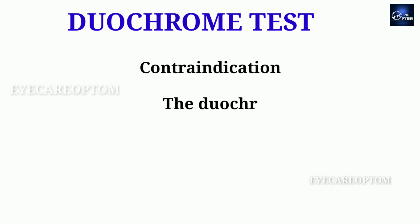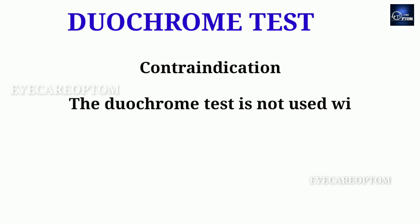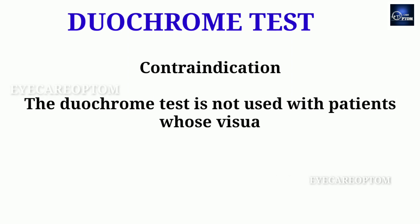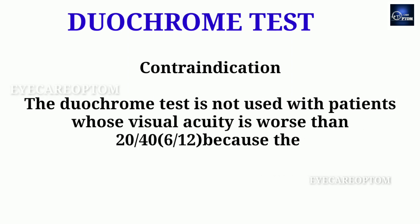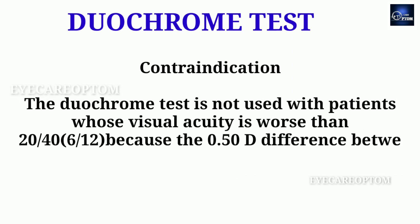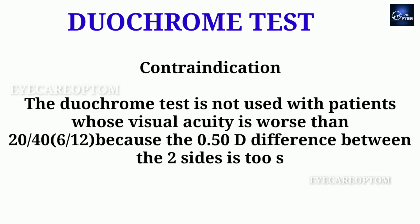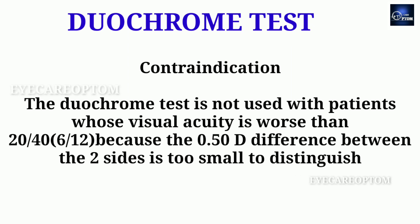Contraindication of the Duochrome test: it is not used in patients with visual acuity worse than 20/40 (6/12), because the 0.50 diopter difference between the two sides is too small for them to distinguish.